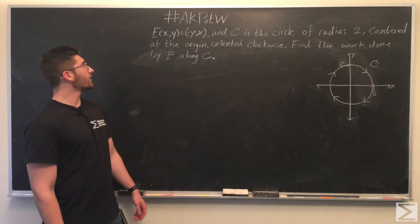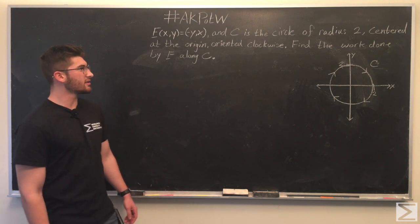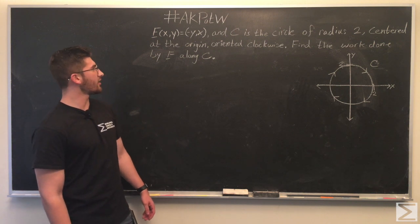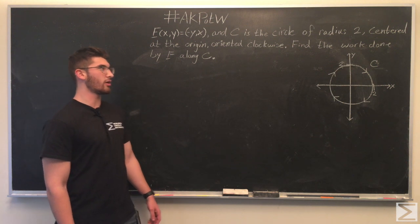In this week's problem, we're given the force function f(x,y) = (-y, x), and c is the circle of radius 2 centered at the origin, oriented clockwise, and we're being asked to find the work done by f along c.